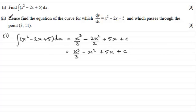Now for the second part, it says, hence find the equation of the curve for which dy dx equals x squared minus 2x plus 5, and which passes through the point with coordinates 3, 11.